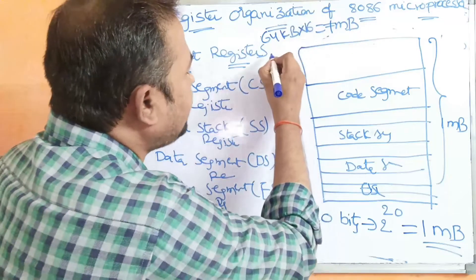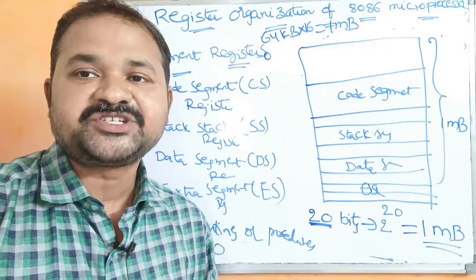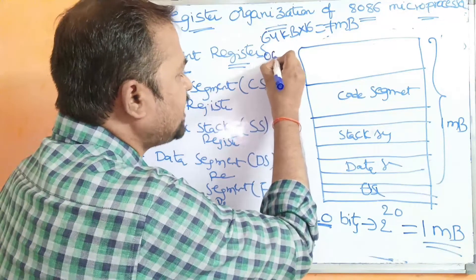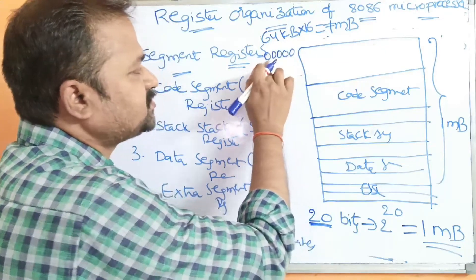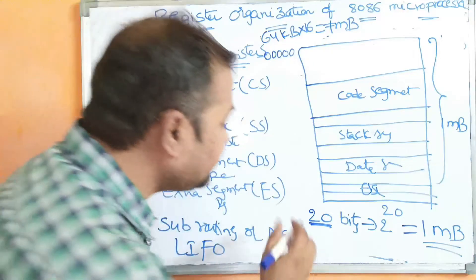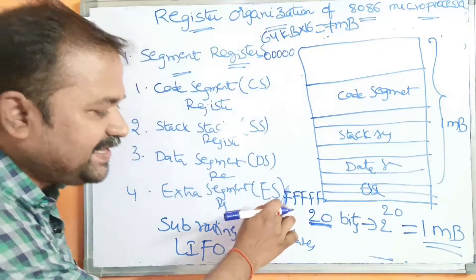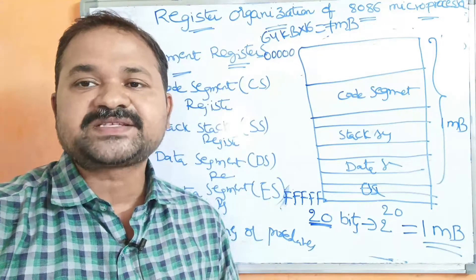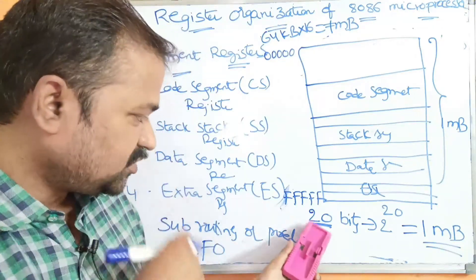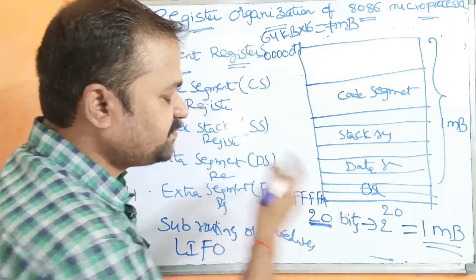The size of the address bus is 20 bits, and we use hexadecimal notation where each digit represents 4 bits, so 5 digits represent 20 bits. The starting address of main memory is 00000H (five zeros), and the maximum address is FFFFFH (five F's), since F represents 15, which is 1111 in binary — five groups of 4 bits gives 20 bits. So the main memory ranges from 00000H to FFFFFH.